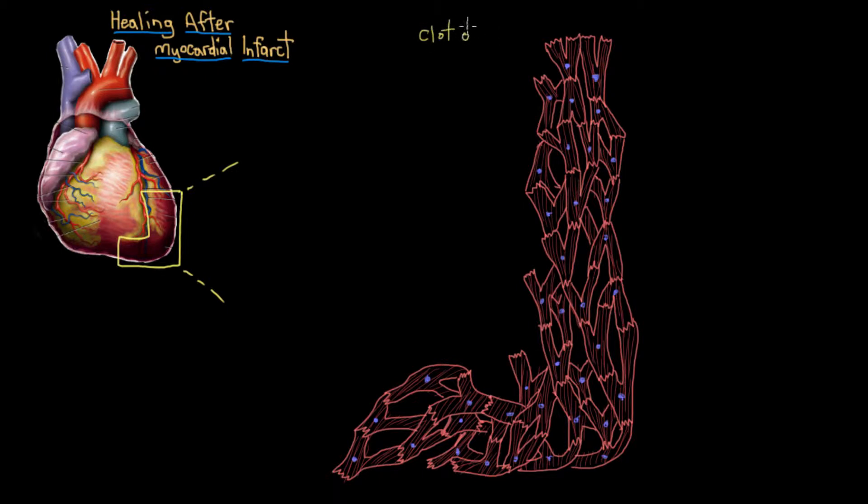Remember, a clot is gonna develop upstream in the coronary artery that serves this area. And that clot will stick around for over 20 minutes to cause irreversible damage in this heart muscle, depriving this area of muscle of oxygen.